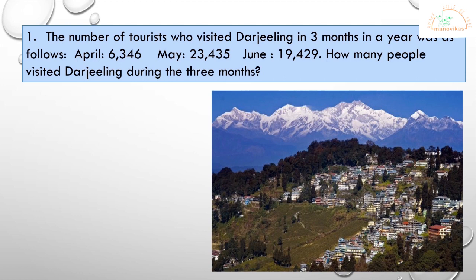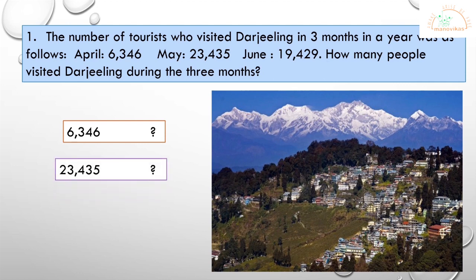I have taken the first problem from Exercise 2.6, page number 28. The number of tourists who visited Darjeeling in three months in a year was as follows: April - 6,346; May - 23,435; June - 19,429. How many people visited Darjeeling during the three months? To understand the problem well, ask: what is 6,346? What is 23,435? What is 19,429?